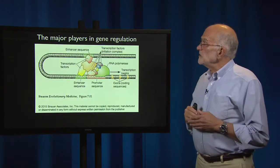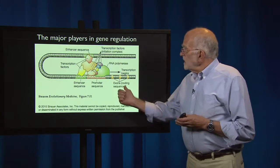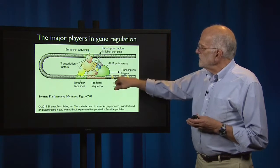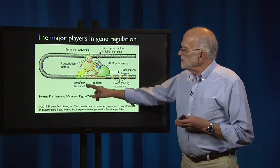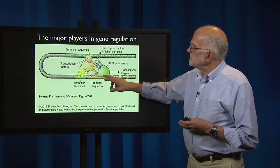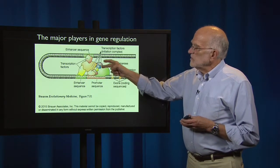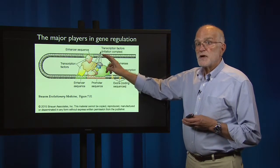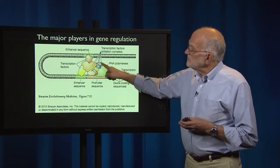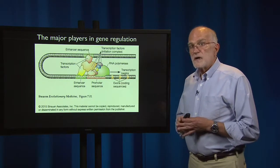The major players in gene regulation are sketched here in this figure. Transcription is going to begin here, and the DNA that will be coding for a protein is going to be laid down to the right. Just upstream of it there's an enhancer sequence and a promoter sequence, and the gene is turned on or off by transcription factors and enhancers that bind to these sequences. These are proteins being produced by other genes that are regulating the expression of this gene. Depending upon what combination of transcription factors this particular gene gets, it will be turned on or off.